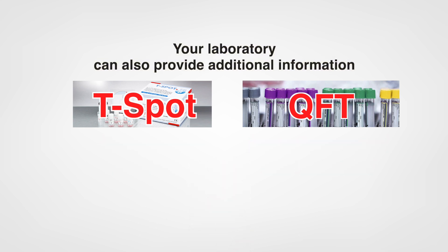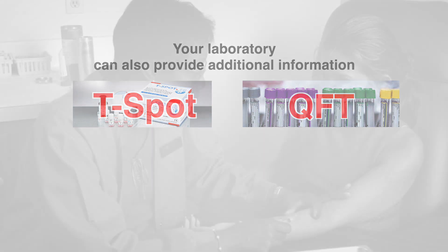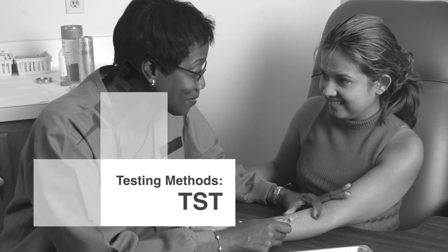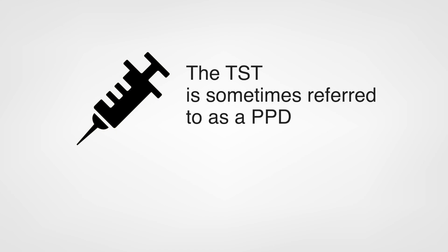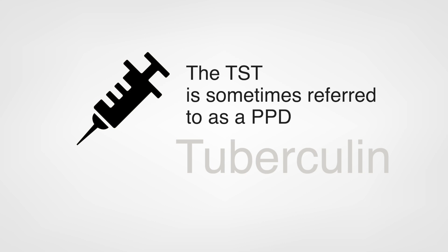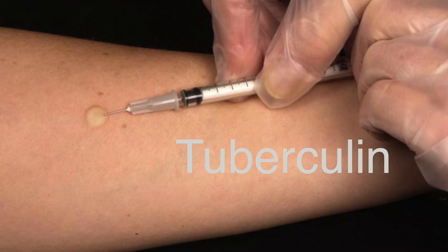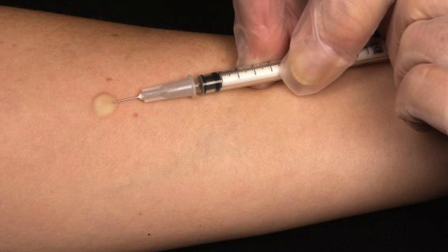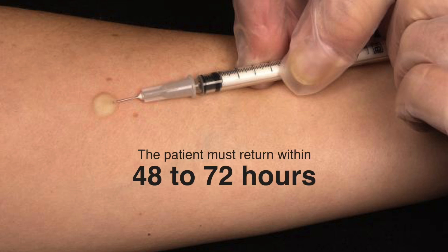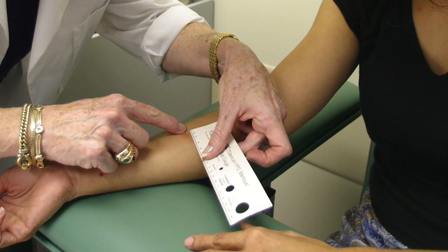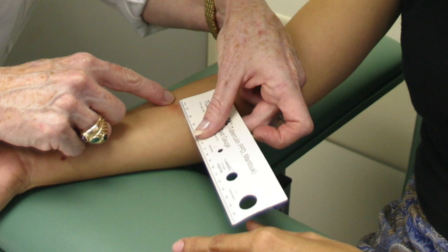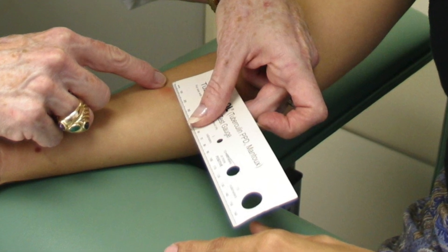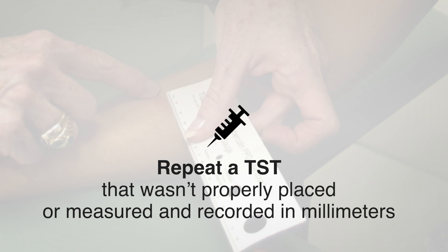The TST is a delayed-type hypersensitivity test. Some people refer to this as the PPD, for the small amount of purified protein derivative, also known as tuberculin, which is injected intradermally in the person's lower arm, creating a small wheal. The patient must return within 48 to 72 hours for an examination of any reaction. When the individual returns, look for a raised, hard area called an induration and measure its size with a millimeter ruler across the width of the arm, not lengthwise. Repeat a TST that wasn't properly placed or measured and recorded in millimeters.